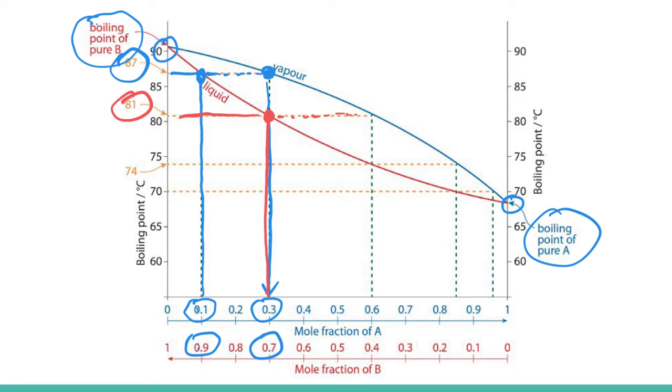If we were to follow that over to the vapor curve, then our vapor is made up of 0.6 A and 0.4 B. So we've jumped up from 0.3 to 0.6 A and we jumped down in B. So it's a little bit more pure in A.